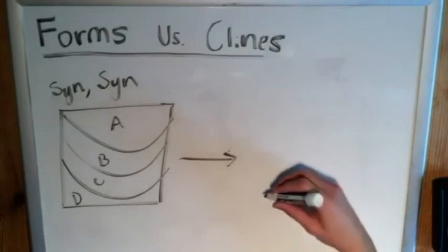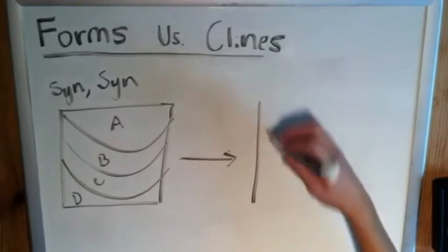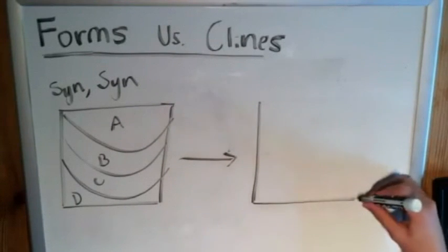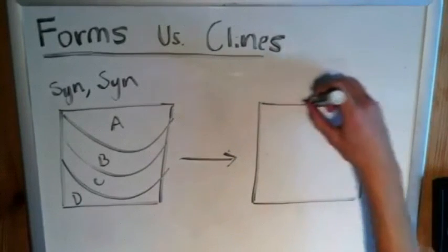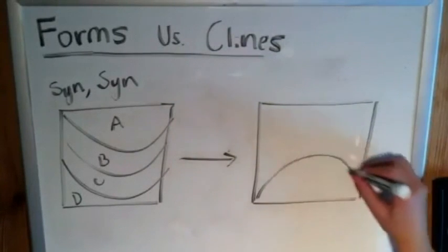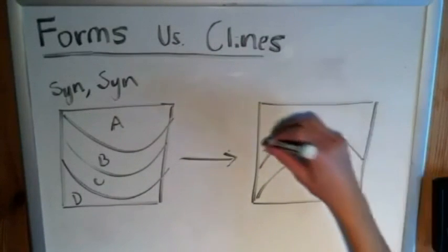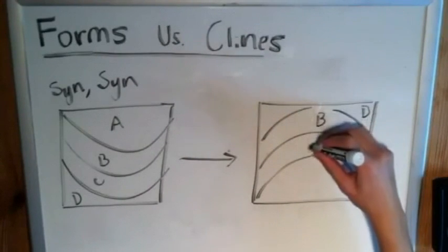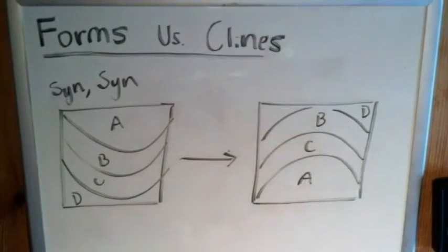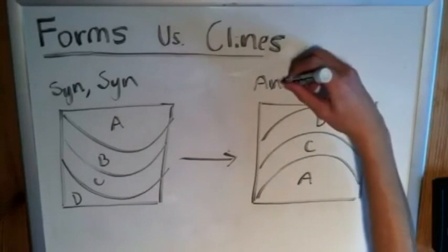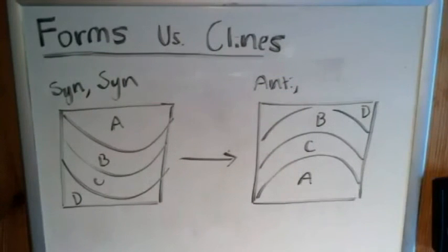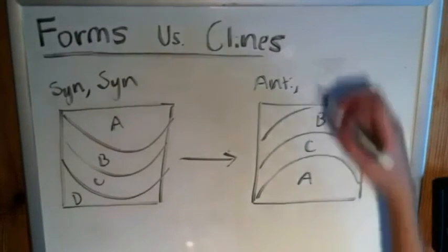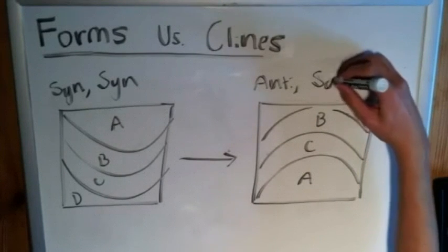However, once again, time passes by, subjected to a lot more pressure, and we end up with something like this. Now it's an antiform. And now D is up here, B is here, C is here, and A is here. It's an antiform. However, since A is still the youngest, you can change the positions of the rocks, but you can't change their age. A is still the youngest, and it's still in the middle, so it is a syncline.